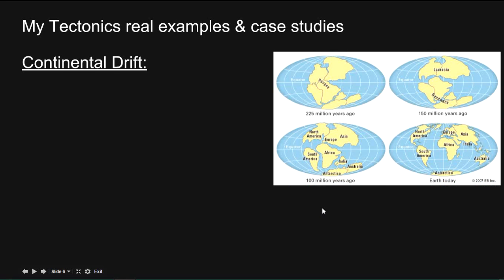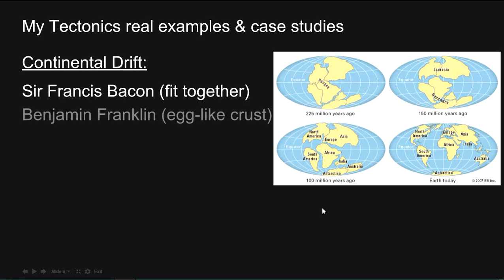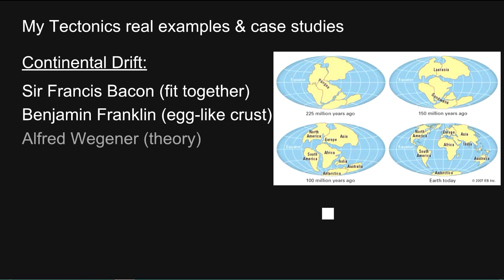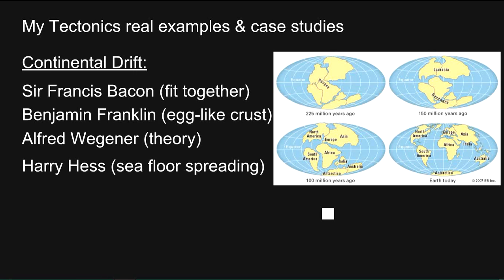For continental drift, the four people I like to talk about are Sir Francis Bacon, who said that continents seem to fit together like a jigsaw puzzle; Benjamin Franklin with his egg-like crust; Alfred Wegener with his theory of continental drift; and Harry Hess with seafloor spreading. We will talk about all four of these later on.